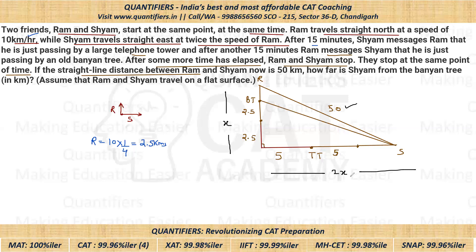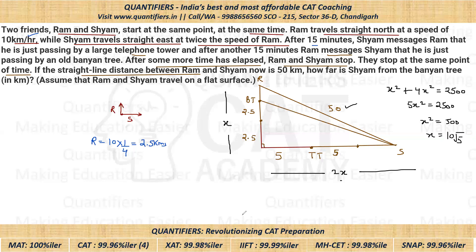In the bigger right angle triangle, I know the hypotenuse is 50. Using Pythagoras theorem: x squared plus 2x squared equals 50 squared. That gives x² + 4x² = 5x² = 2500. So x² = 500, and x = 10√5. Therefore, 2x = 20√5.